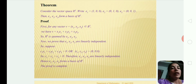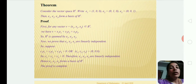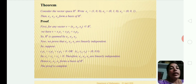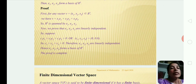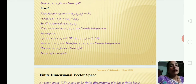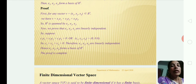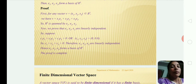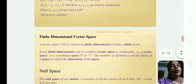This is an already explained theorem. e1 = (1,0,0), e2 = (0,1,0), e3 = (0,0,1). Then {e1, e2, e3} form a basis of R³. For v = (x1, x2, x3), the linear combination is v = x1*e1 + x2*e2 + x3*e3. If c1*e1 + c2*e2 + c3*e3 = 0, then c1 = 0, c2 = 0, c3 = 0 individually. Hence {e1, e2, e3} forms a basis of R³.